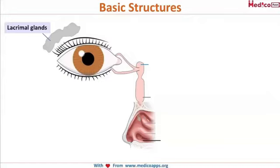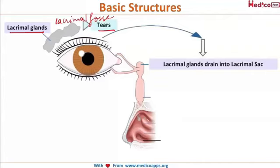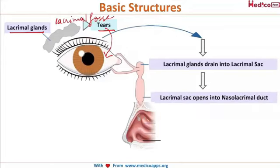The tears are produced by the lacrimal glands, which are located in the lacrimal fossa. The lacrimal gland produces tears into the conjunctival sac. From the conjunctival sac, the tears are drained into the lacrimal sac.